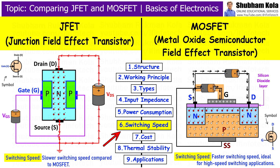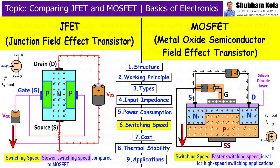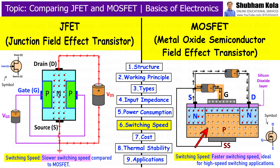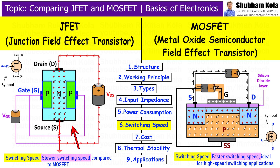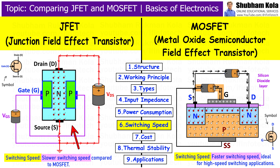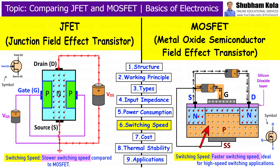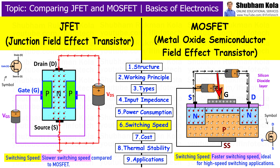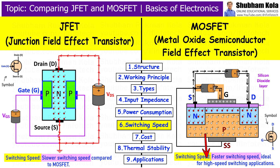Next is switching speed. When it comes to switching speed, which is important for digital and high-speed applications, MOSFETs outperform JFETs. JFETs have moderate switching speed because the charge carriers inside JFET are slower compared to MOSFET, which limits how fast it can switch between on and off states. MOSFETs have very fast switching speed due to the insulated gate, which allows the transistor to switch on and off quickly. This makes MOSFETs ideal for high-speed switching applications.